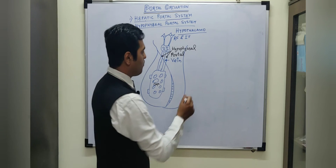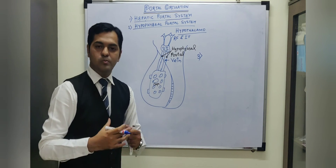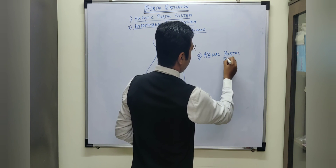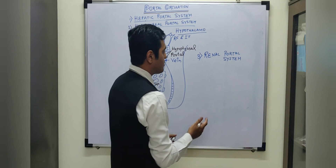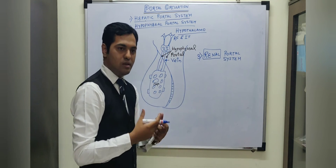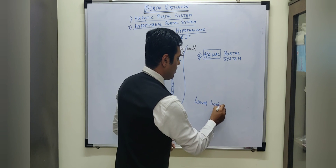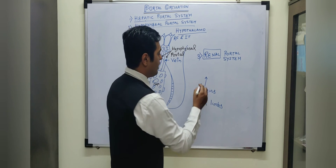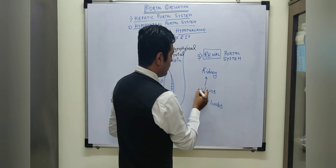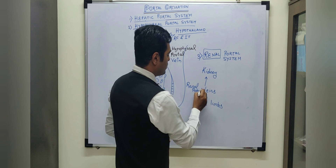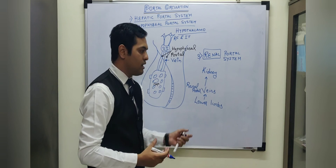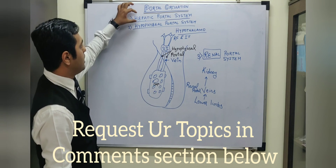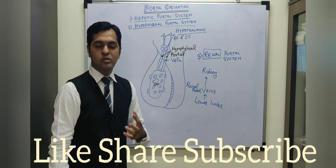There is also a third type of portal circulation, which is not present in humans but is present in certain amphibians like frogs, known as the renal portal system. This consists of a portal vein which carries the blood towards the renal organs, that is the kidneys. In certain amphibians, from the lower limbs, certain veins arise, and these veins instead of carrying deoxygenated blood to the heart, carry the blood towards the kidneys. These are known as the renal portal veins. From the kidneys, the vein which arises then carries the blood towards the heart. Remember, the renal portal system is not present in human beings. In humans, we have only the hepatic portal system and the hypophysial portal system.